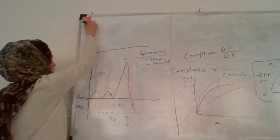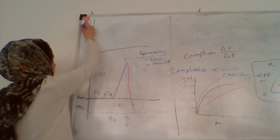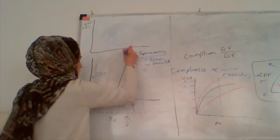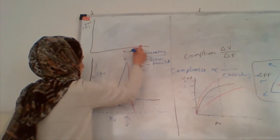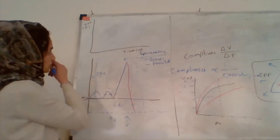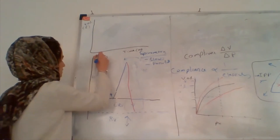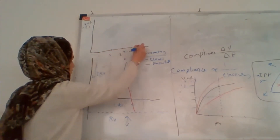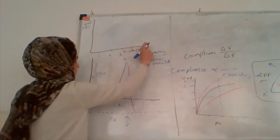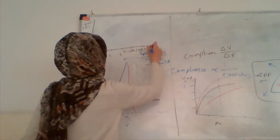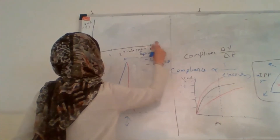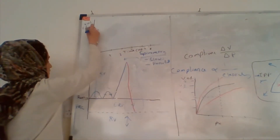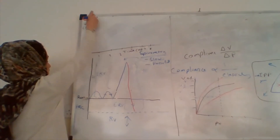On the volume-time graph, the y-axis represents volume in liters — marked at one, two, three, four, five liters — and the x-axis represents time in seconds.